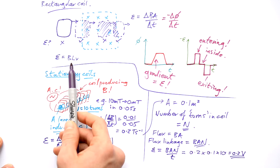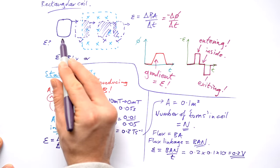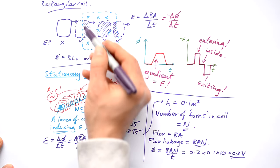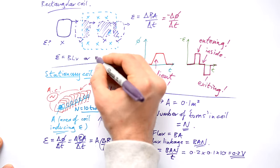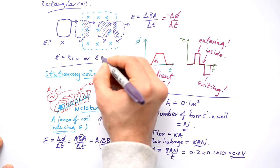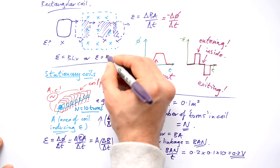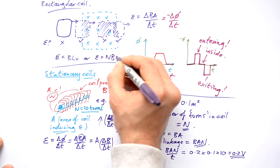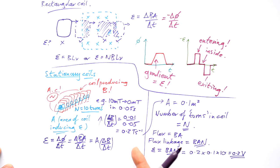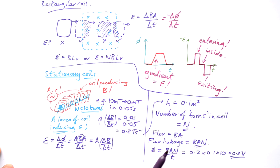Incidentally, the same applies up here — if this rectangular coil had several turns behind it, then actually this would be equals to N B L V. Everything we've done so far works for a coil or wire with just one loop or one turn. All we have to do to find out the EMF for a coil with several turns is multiply by the number of turns.